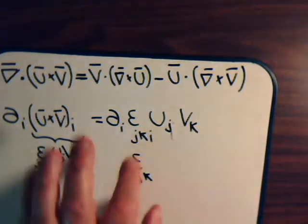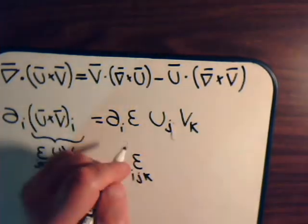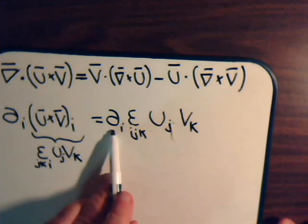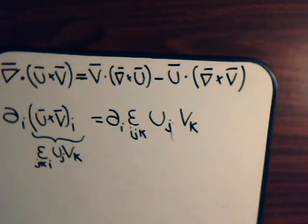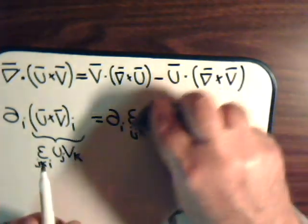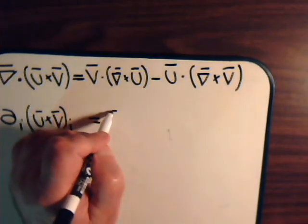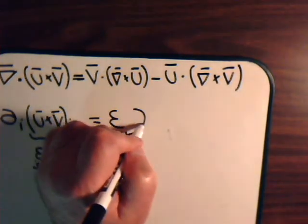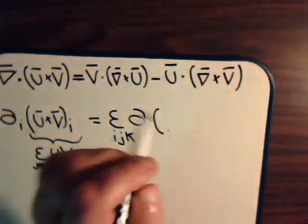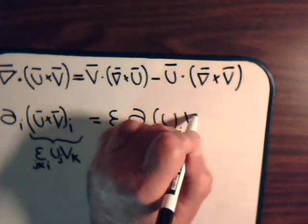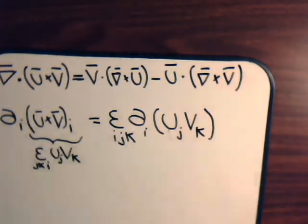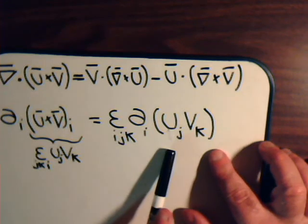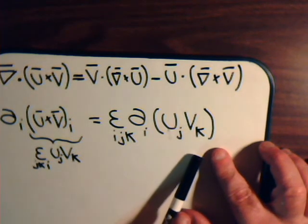So we can express this as epsilon i j k, and we can bring partial i inside to give us epsilon i j k times partial i of u j v k. Here we're taking the partial derivative of a product of scalars u j and v k.